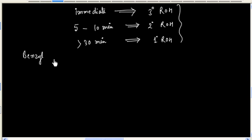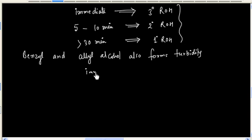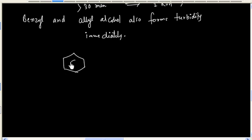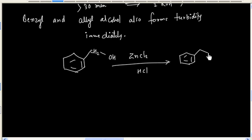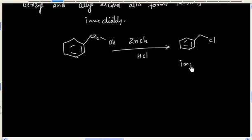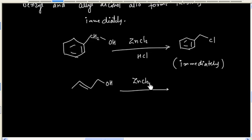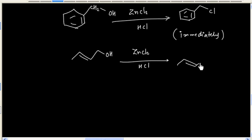Benzyl and allyl alcohols also form turbidity immediately. If I have this alcohol, it reacts with Lucas reagent and will form alkyl halide, turbidity will appear immediately. If I have allyl alcohol, in this case again turbidity will appear immediately.